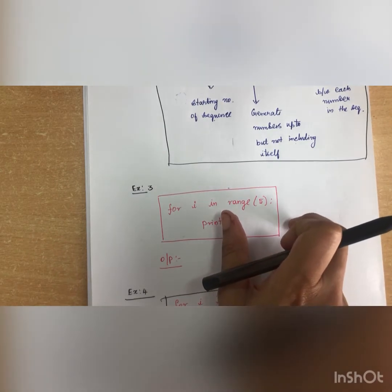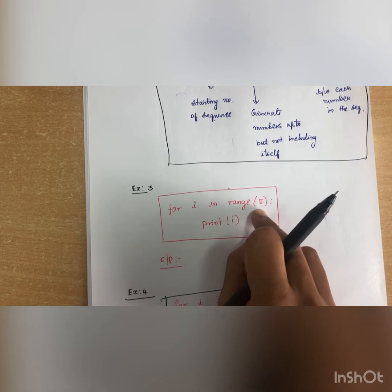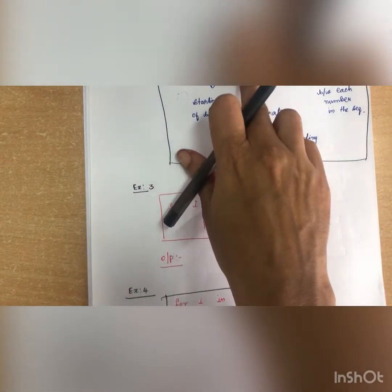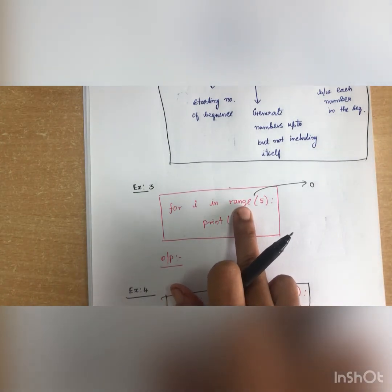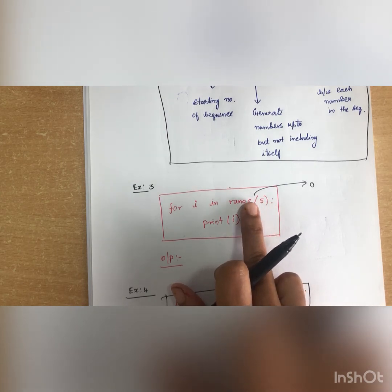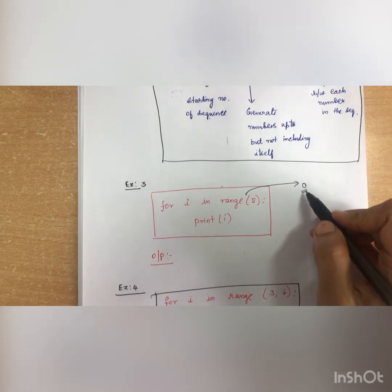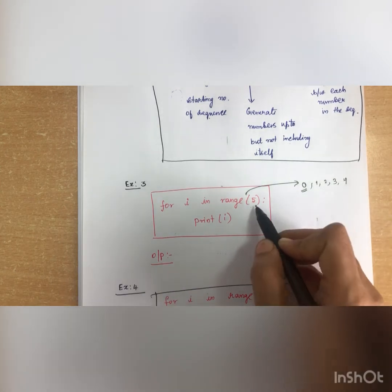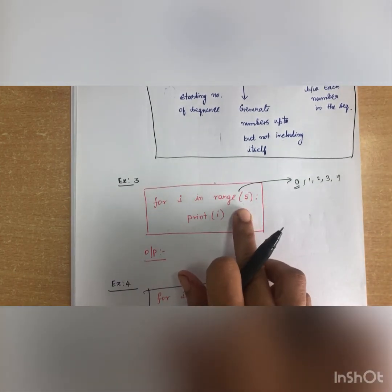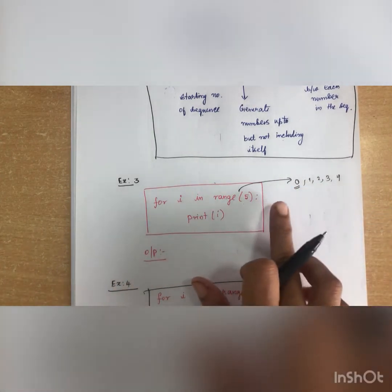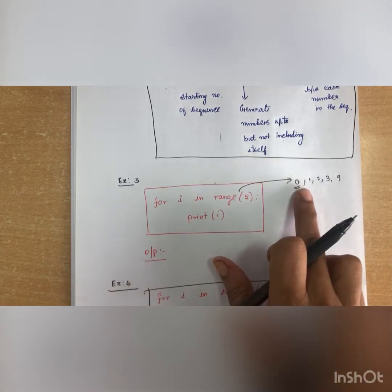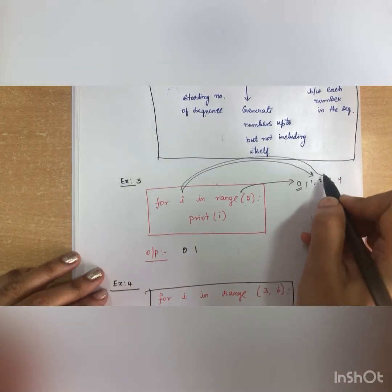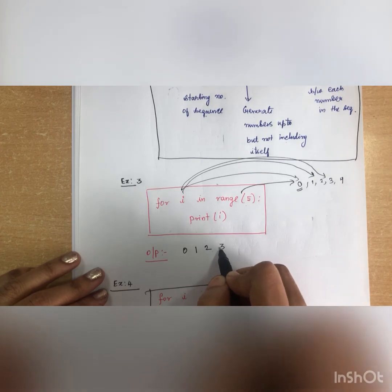For example: for i in range(5) — here only the stop value is given. By default the start is 0 and the step is 1. So range(5) generates 0, 1, 2, 3, 4 — it does not include 5. When you execute this for loop, i takes values 0, 1, 2, 3, 4 and prints them on screen.